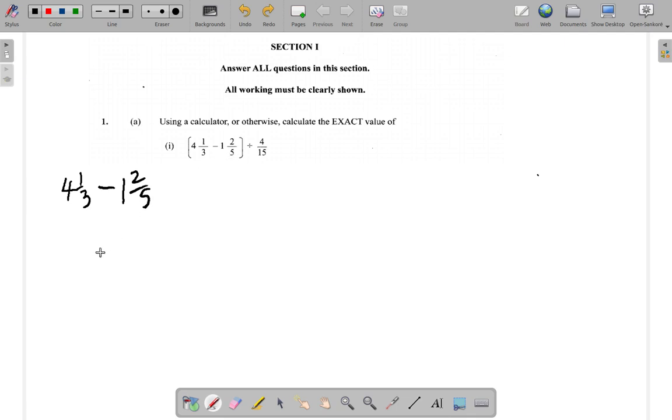Now just going through the steps, we're going to convert all of these mixed fractions to improper fractions. So we have 4 threes is 12, 12 plus 1 is 13, so 13/3 minus 5 times 1 is 5, plus 2 is 7, so 7/5.